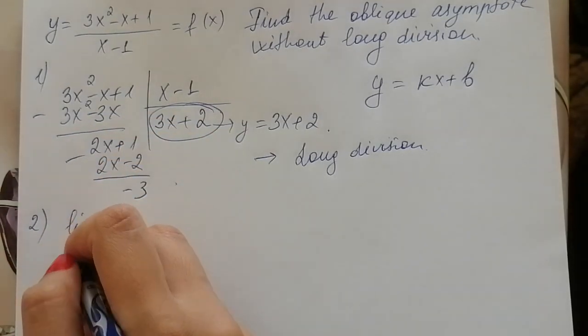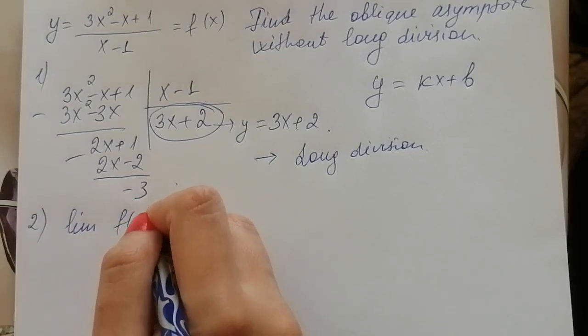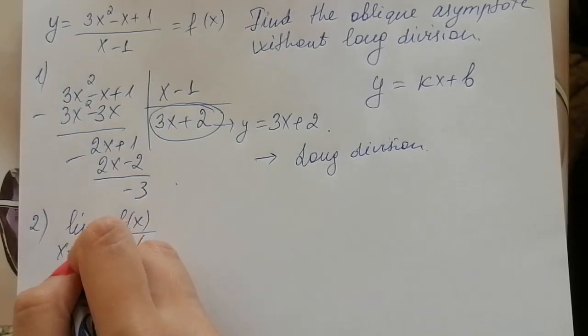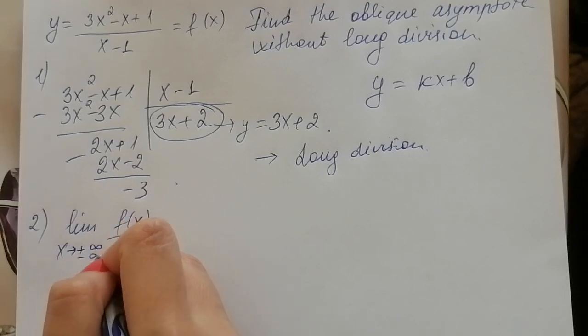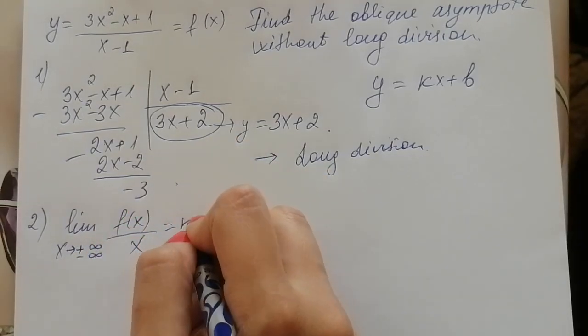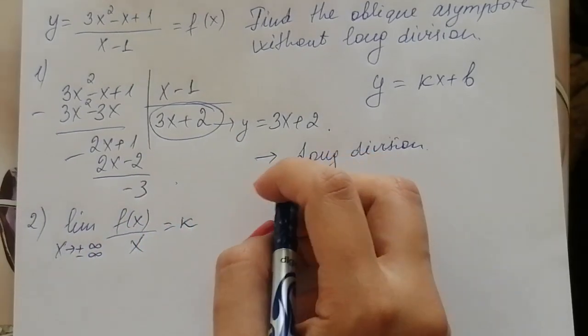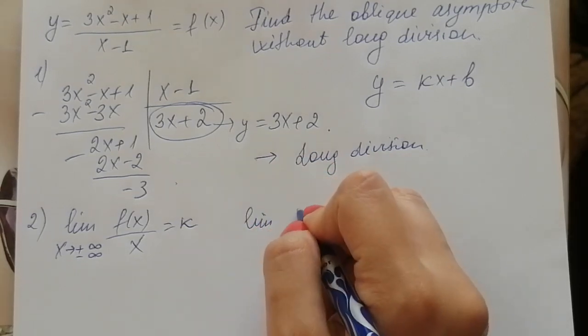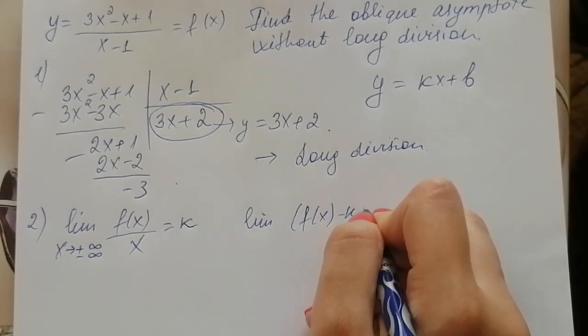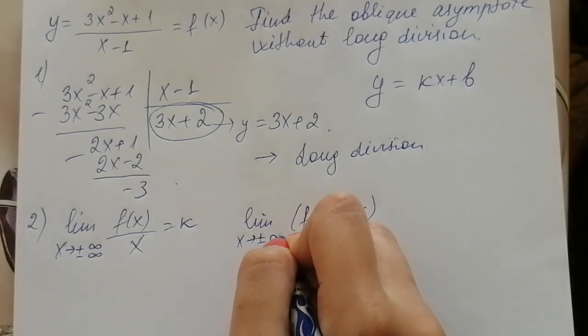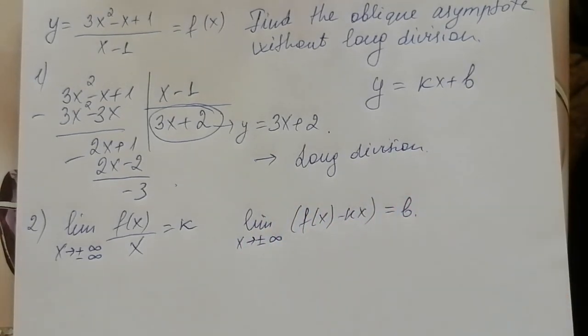Limit of function f(x) over x when x tends to infinity is equal to k, and limit of function f(x) minus kx when x tends to plus minus infinity is equal to b.